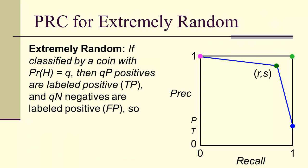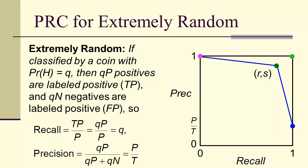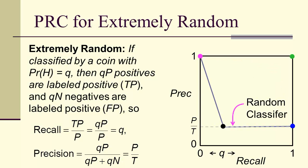Now what if we were extremely random? If we classify with coin tosses, then the probability of heads Q would mean we'd have QP positives and QN negatives. Therefore, the recall would be Q, but the precision would be P over T. We have a Q that could be anything between 0 and 1, and a random classifier would be something that relatively quickly dropped off down to the P over T.